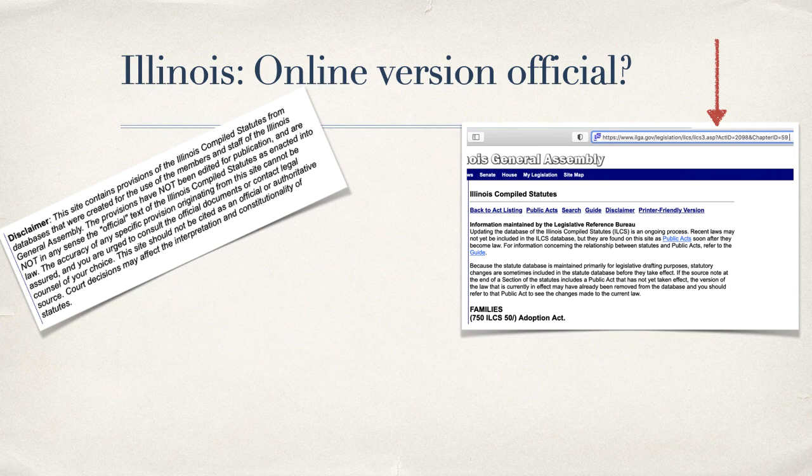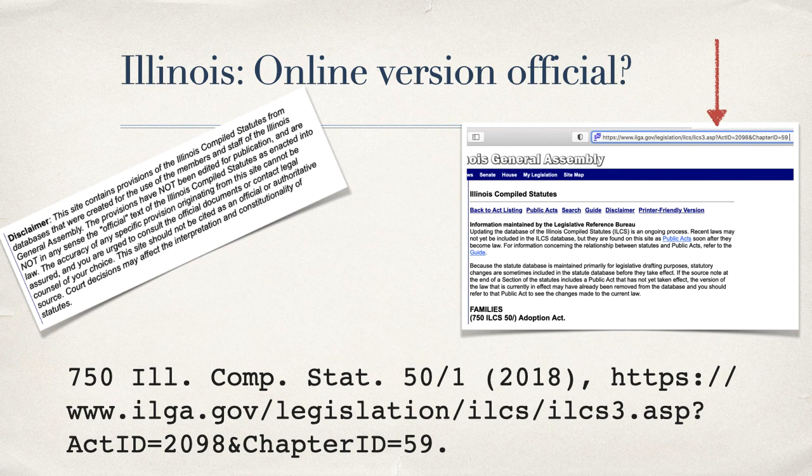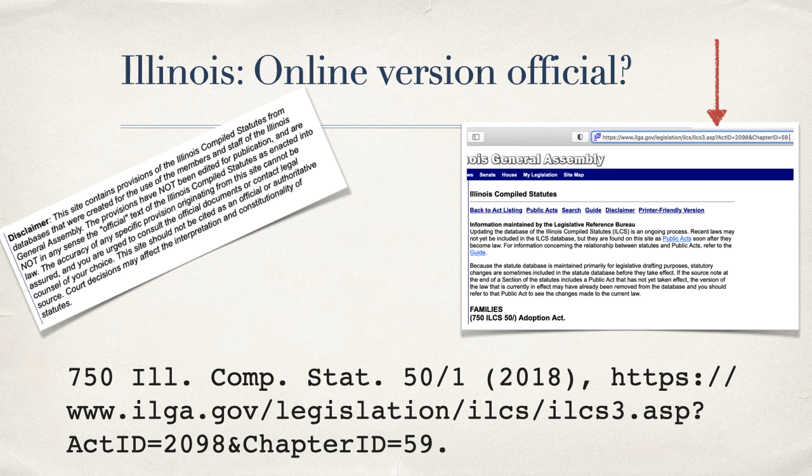Citing to the online version of Section 1 of the Adoption Act would therefore look like this. For more information on citing electronic statutory sources, including citing statutes that you found on Westlaw or Lexis, please see Rule 12.5.